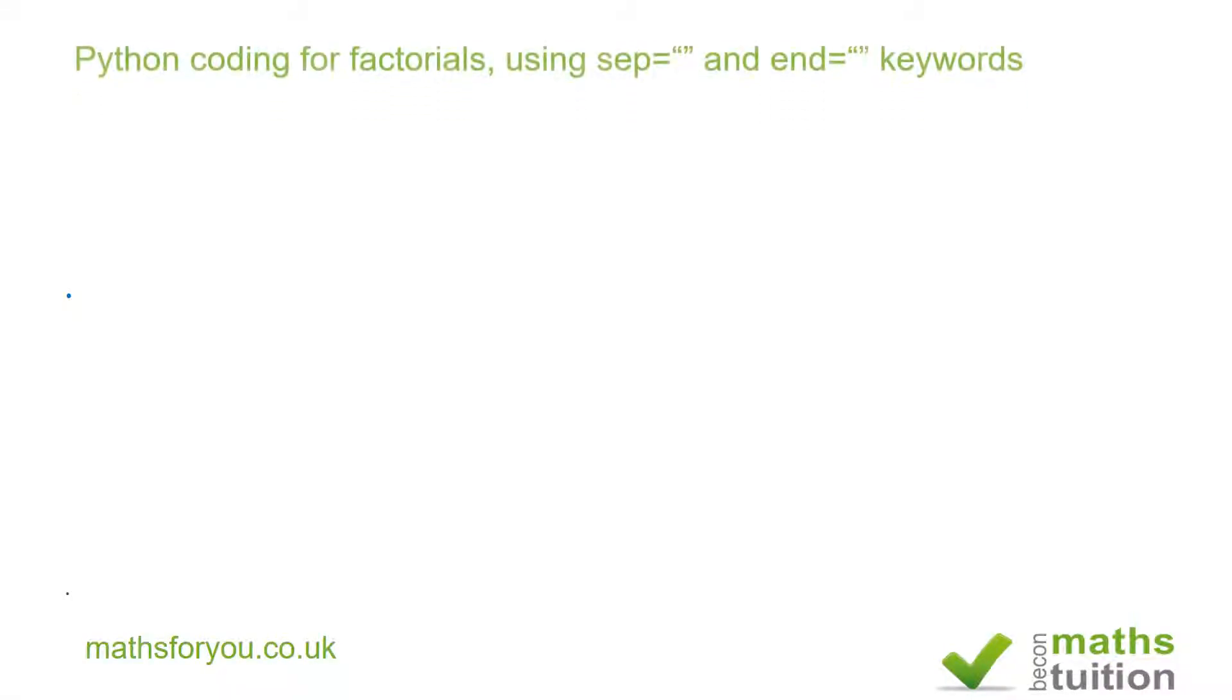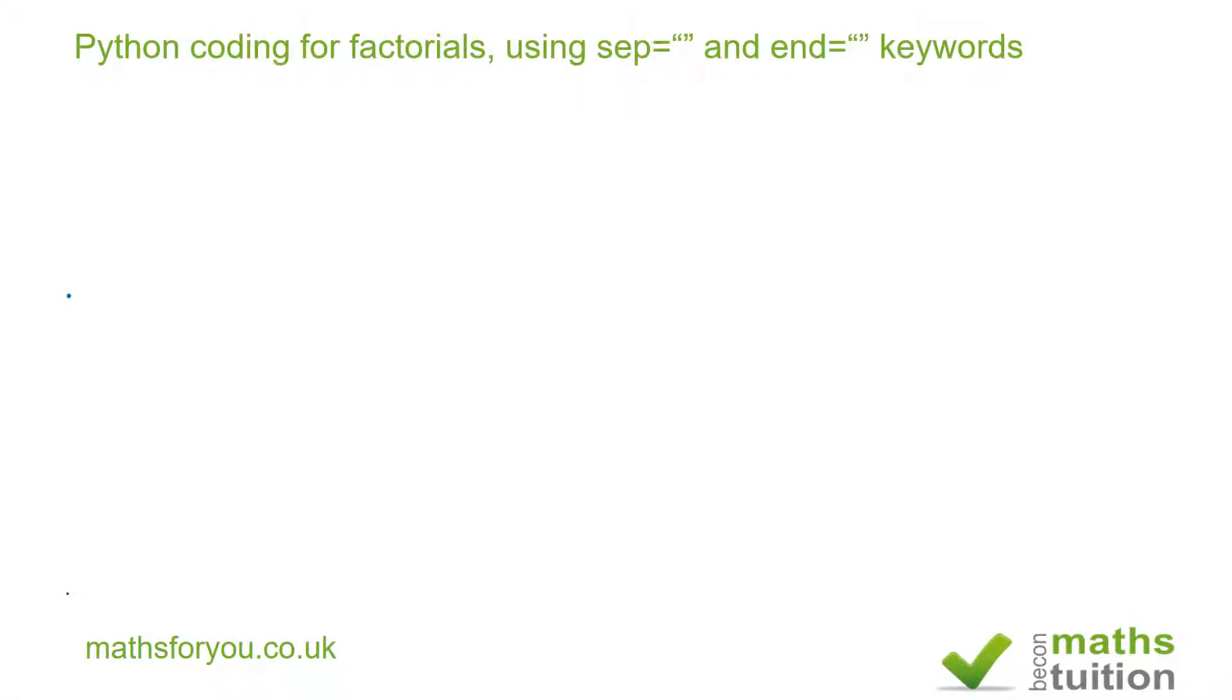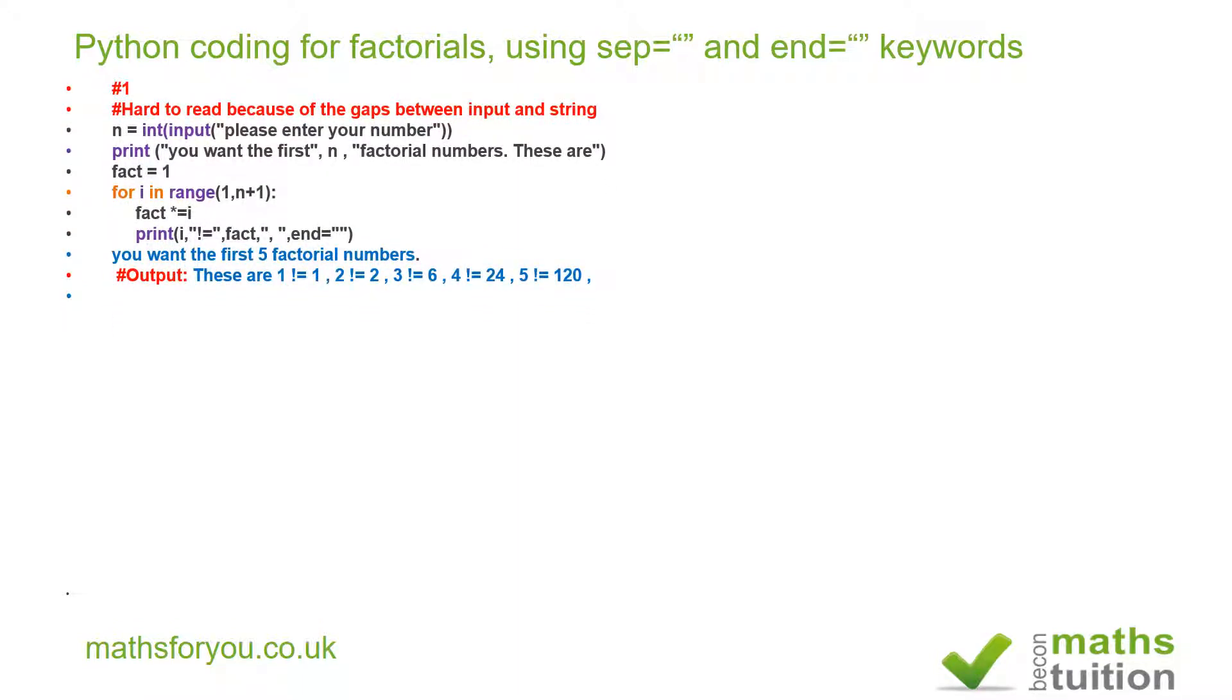Hello and welcome to this exercise on Python coding for factorials. As usual, this is for beginners. If you're vast in programming, this is not for you, unless of course you want to improve what I've done. Previously I introduced the keyword 'end' when I did Python coding for triangular numbers. Now I've got a new keyword here: 'sep'.